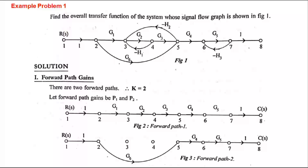Now let's solve an example problem: find the overall transfer function of the system whose signal flow graph is given. R(s) is the input node and C(s) is the output node. The first step is to find the forward path gains — that is, all possible ways to go from the input node to the output node. One path is: node 1 to 2, 2 to 3, 3 to 4, 4 to 5, 5 to 6, 6 to 7, and 7 to 8. This is one direct path.